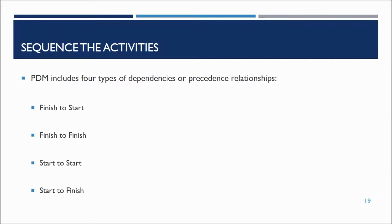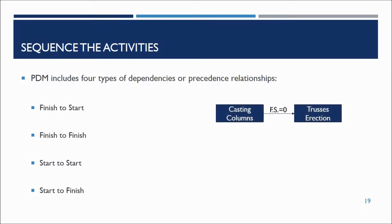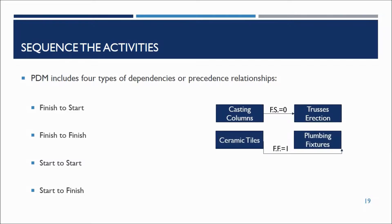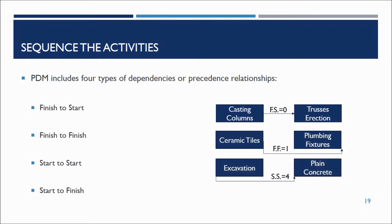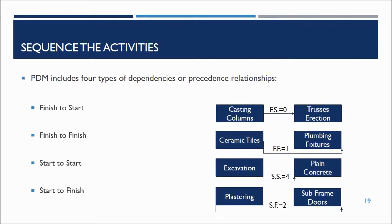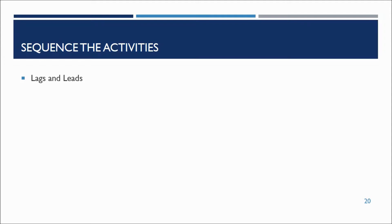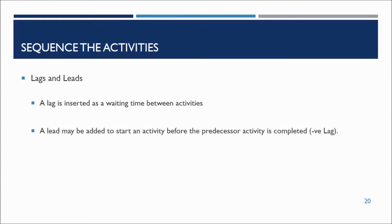The precedence diagramming method includes four types of dependencies for sequencing activities: finish-to-start, finish-to-finish, start-to-start, and start-to-finish. For example, trusses will be erected after casting the columns. Plumbing fixtures will be finished after finishing the ceramic tiles by one day. Plain concrete can start after four days of starting excavation. Plastering activity shall be started to fix subframes after two days. In these examples, lags and leads are used. A lag is a duration inserted as a waiting time between activities, while a lead is a negative lag that may be added to start an activity before the predecessor activity is completed.